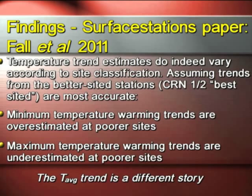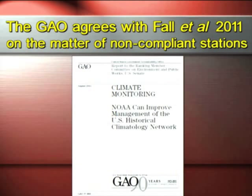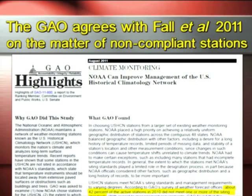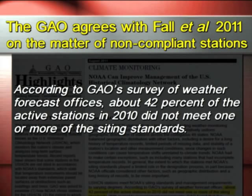Temperature trend estimates vary according to site classification. Minimum temperature warming trends are overestimated at poorer sites, and maximum temperature trends are underestimated at poorer sites. This pie graph shows all the different siting measurements we did — only a small number of stations are compliant according to NOAA siting standards. 92.1% of the U.S. Historical Climatological Network is not compliant at all. This was backed up by a GAO report this past summer, which found significant issues with the climate monitoring network — though they came up with a different number of about 42%.